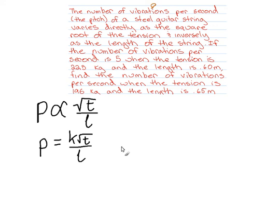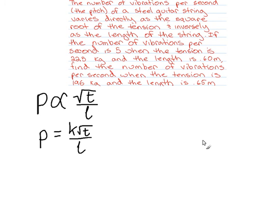Now to find K, we're going to have to use some of these numbers that we've been given, and it's a straightforward question of substituting. So let's just scroll down a bit. The number of vibrations per second is 5, that's the pitch, so 5 must equal K times the square root of the tension, 225, over 0.6. So we just need to rearrange that now.